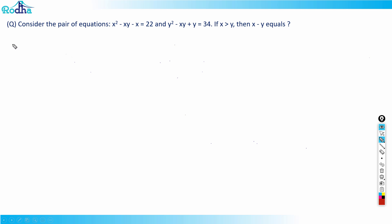Hi guys, let's look at this next question from CAT 2021 slot 2 quant. Consider the pair of equations: x² - xy - x = 22 and y² - xy + y = 34. If x is more than y, then x - y equals what?